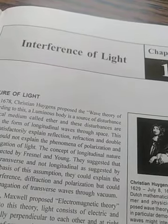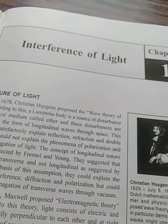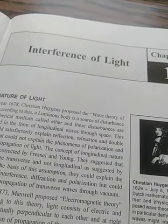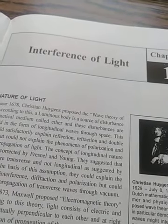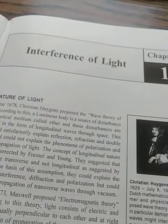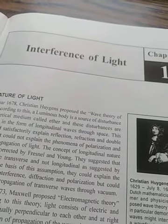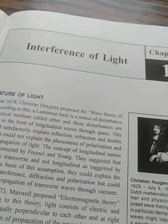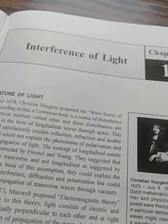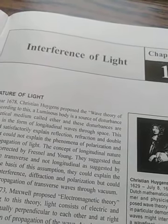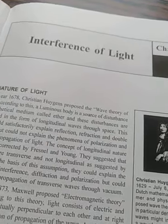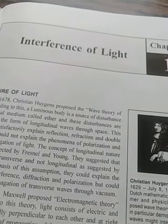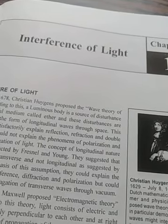Interference can be studied by two ways. One is division of wavefront and the other is division of amplitude. Experiments based on division of wavefront include the Fresnel biprism experiment and most commonly the Young's double slit experiment. Experiments based on division of amplitude include the Newton's ring experiment and the Michelson interferometer experiment.